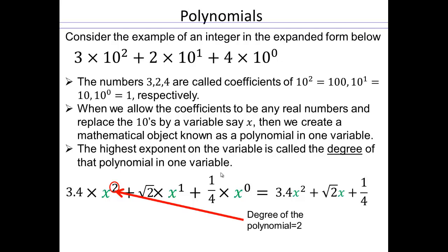The highest exponent on the variable is called the degree of the polynomial in one variable. So degree of the polynomial in one variable is the highest power that occurs in all of the terms that you see here added together.